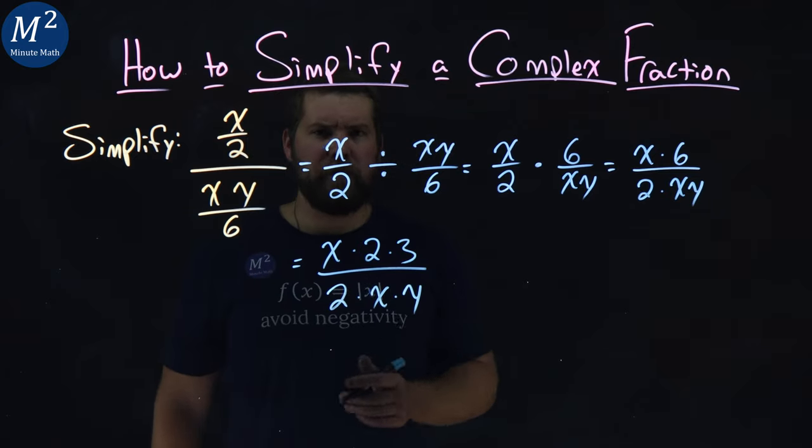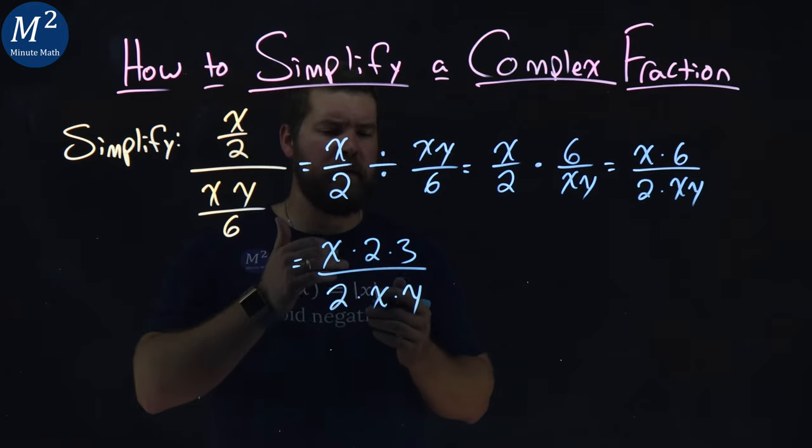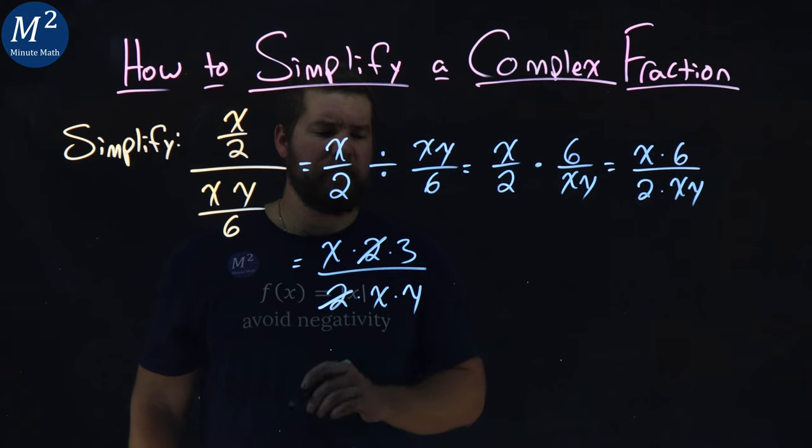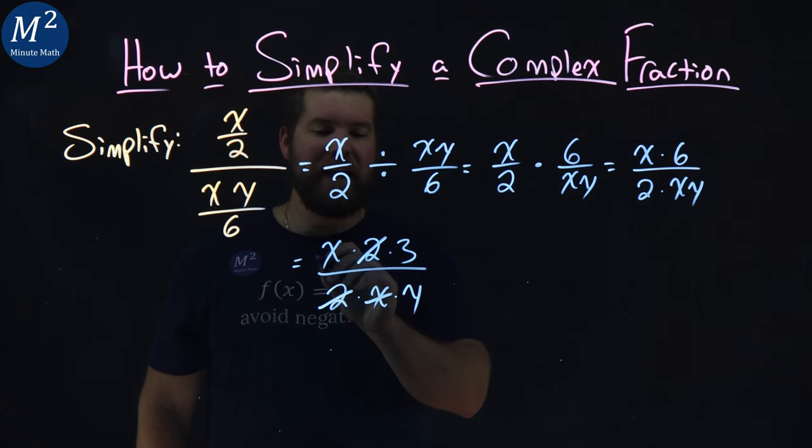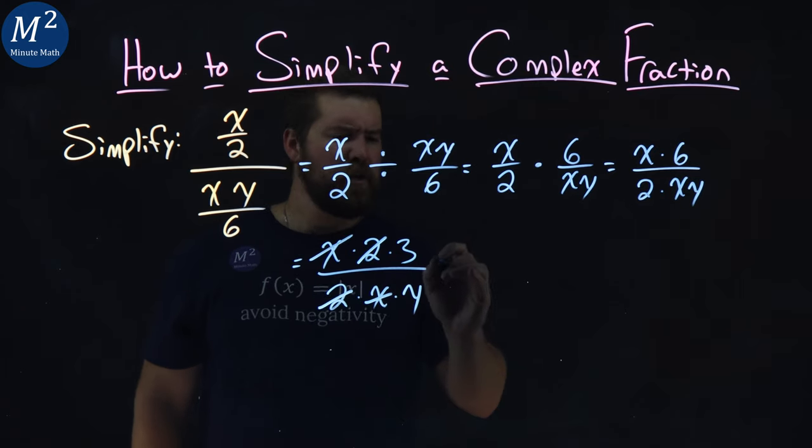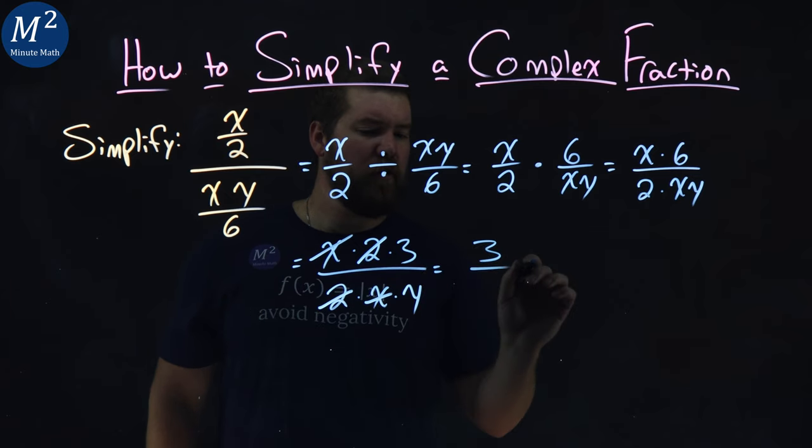Let's cross off the same number as the numerator and the denominator. 2's cancel right here, and so do the x's. So we're left with now just a 3 in the numerator and a y in the denominator.